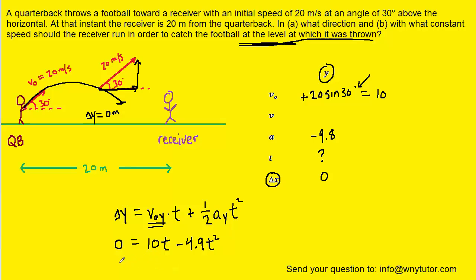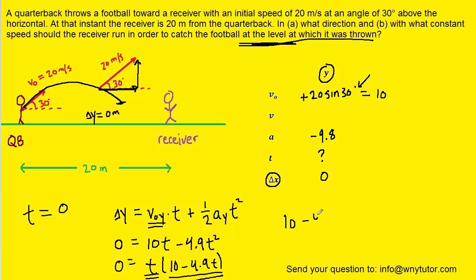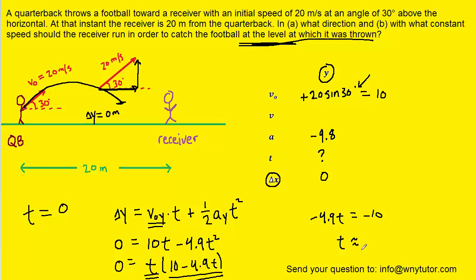We want to solve this equation for time t. One way of doing that is to factor out t, which leaves us with 10 minus 4.9t. We set the factor 10 minus 4.9t equal to 0 — we don't set the t factor to zero because that gives t = 0, which we don't want. We subtract 10 to the other side and divide both sides by negative 4.9, and we get a time of approximately 2.04 seconds. So this is how long the ball is in the air.